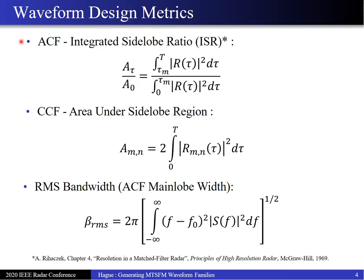Here are the design metrics we'll consider. For the auto-correlation function, we'll be interested in the integrated sidelobe ratio, which is the ratio of the area under the sidelobe region divided by the area under the mainlobe region. For the cross-correlation function, since we don't have a mainlobe, we're interested in the area under the entire cross-correlation function. We'll also be interested in the RMS bandwidth, which measures the spread of the waveform spectra about its centroid F0, the inverse of which determines the area under the mainlobe of the auto-correlation function. We'll use RMS bandwidth as a constraint in our waveform optimization problems.